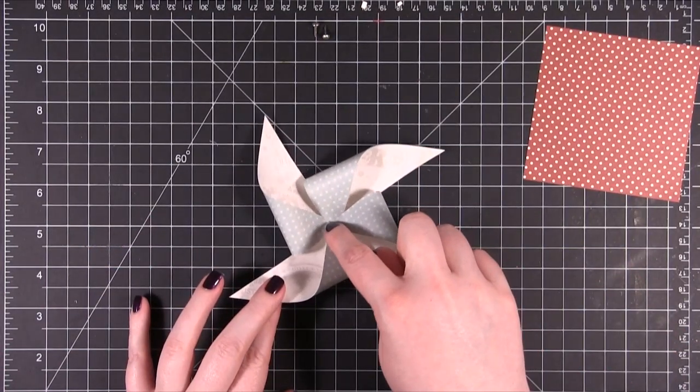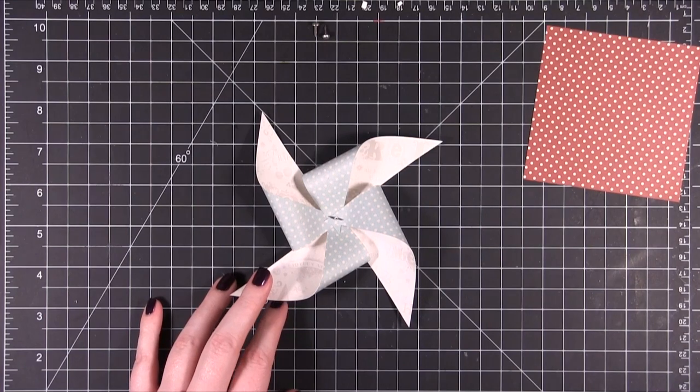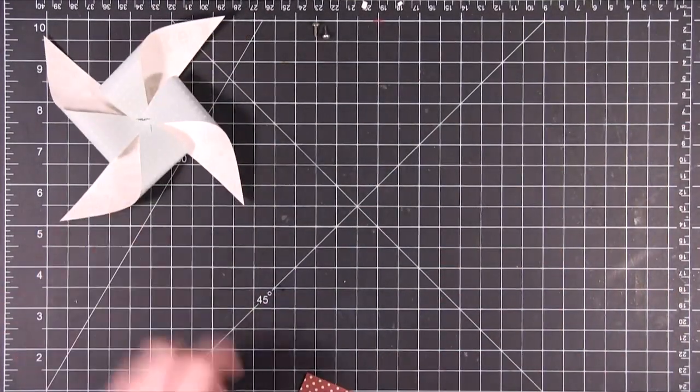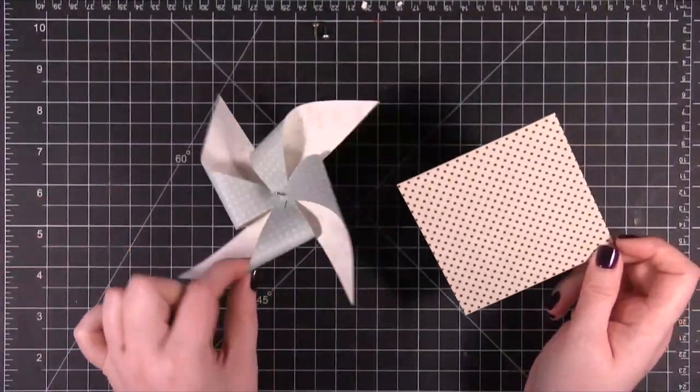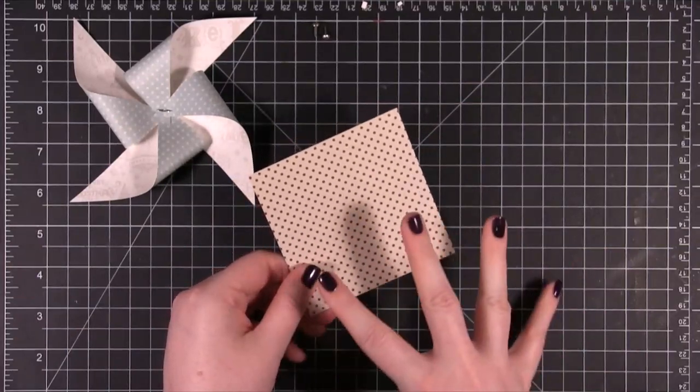That's going to hold everything in place and I didn't use any adhesive. To finish off the pinwheel you're going to want to put something in the center, maybe a punch heart or a punch circle, anything like that. I'm going to show you with this smaller version as well with this small paper. Now this one is a little bit too big for a card but you could definitely put it on a gift. This one will be a little bit more card sized.